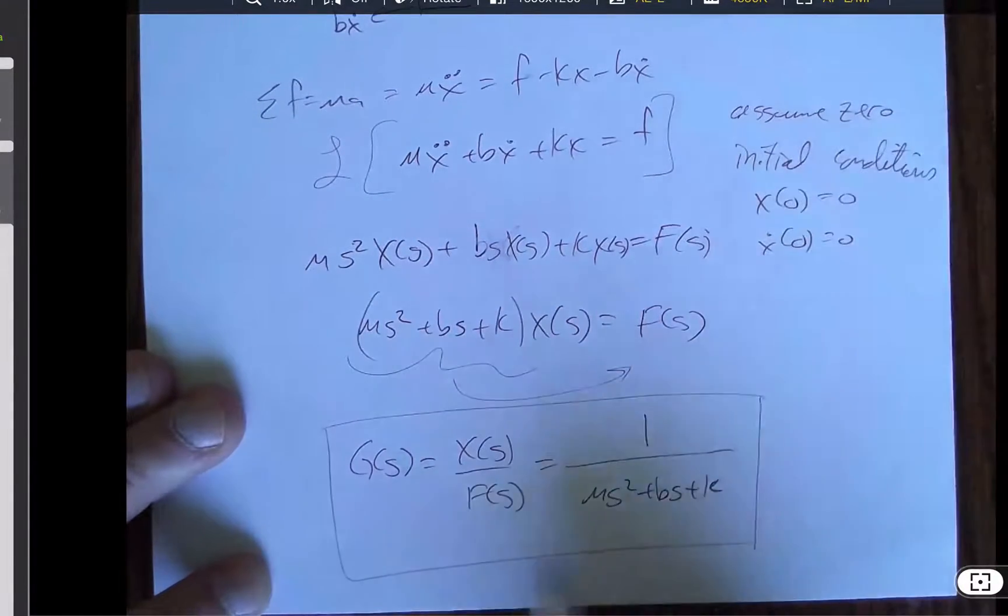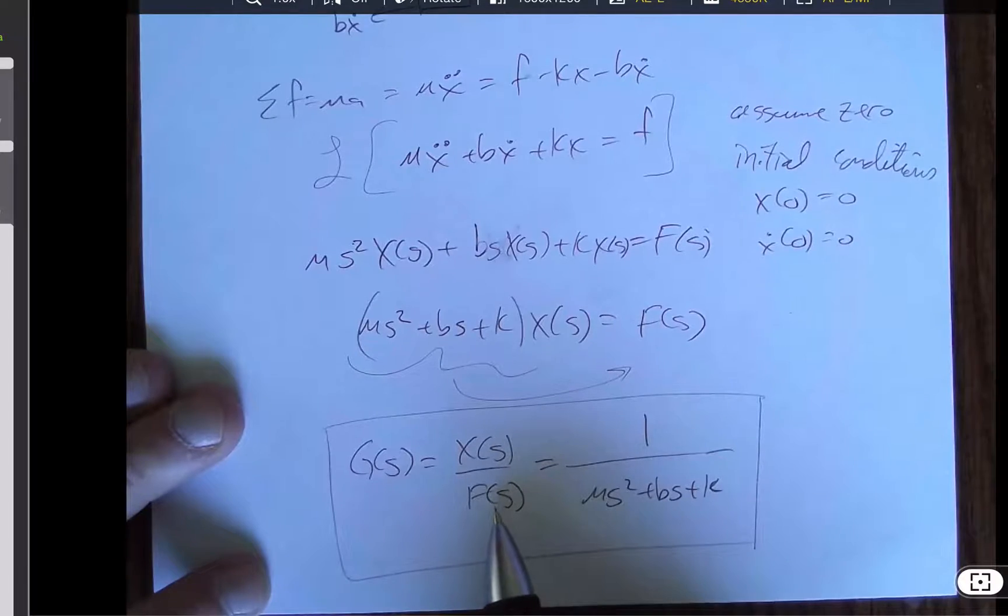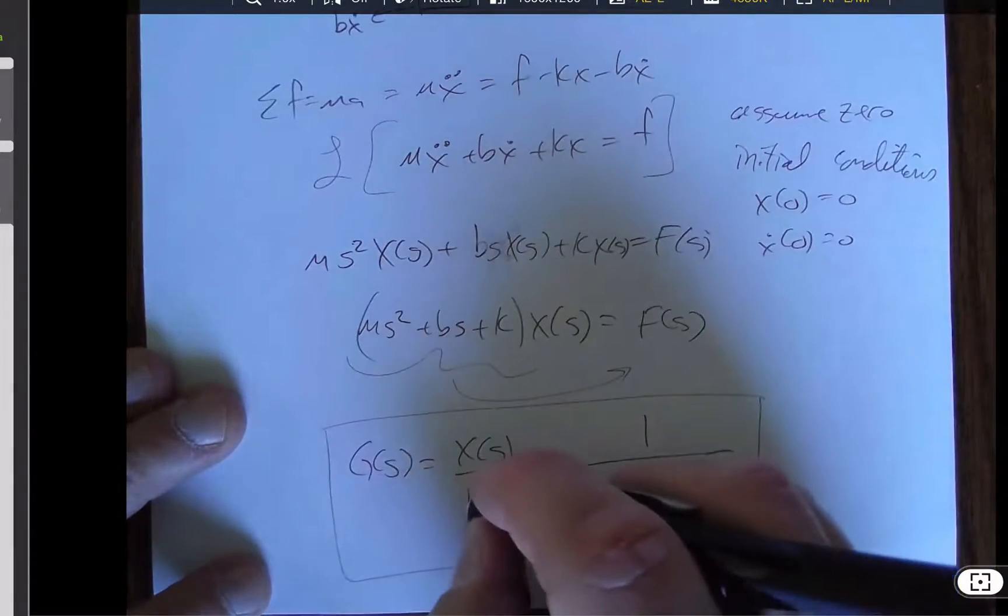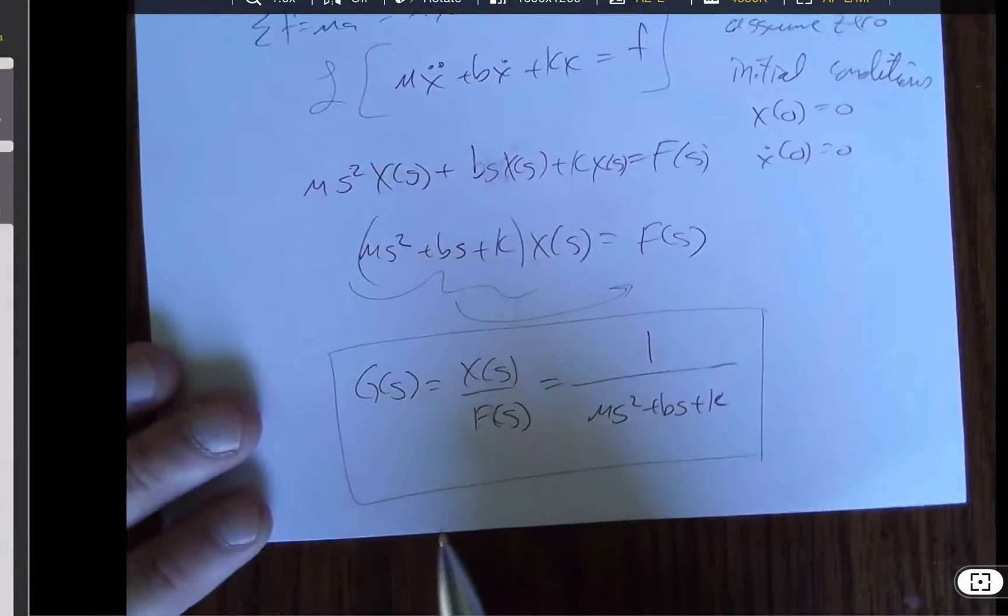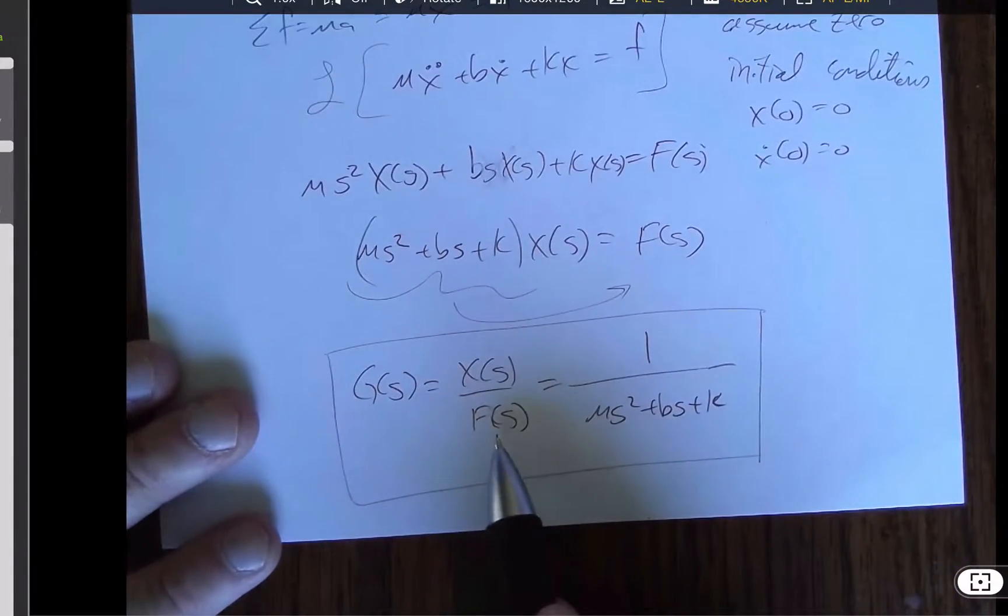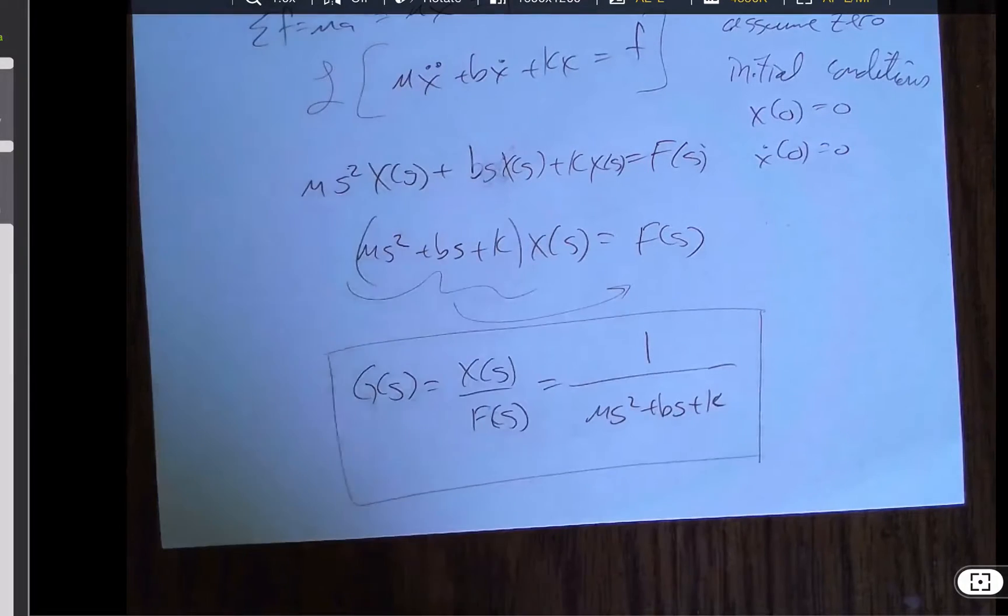And then once we have the transfer function, we can multiply by the Laplace transform of any F of s input to find any x of s output. And so we'll do that for impulses, steps, fixed sine, that kind of thing.